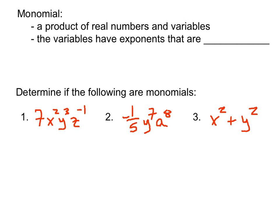The key here to remember is that these variables can have exponents on them. So we could have an x squared, or a y to the seventh, or a z to the hundredth power. But in order to be a monomial, all the exponents that are on the variables have to be non-negative integers.